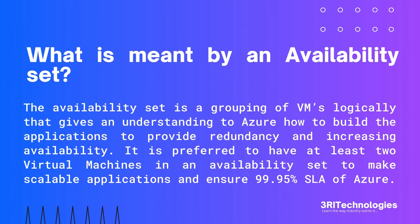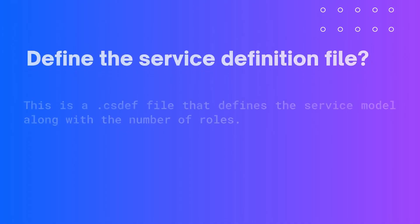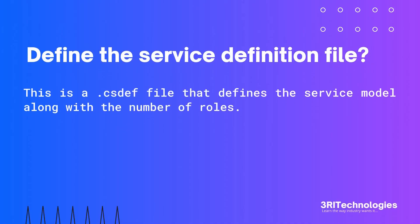What is meant by an availability set? The availability set is a grouping of VMs logically that gives Azure an understanding of how to build applications to provide redundancy and increase availability. It is preferred to have at least two virtual machines in an availability set to make scalable applications and ensure 99.95% SLA of Azure.